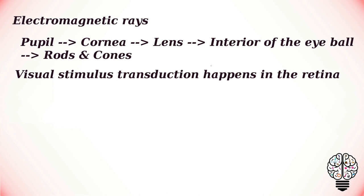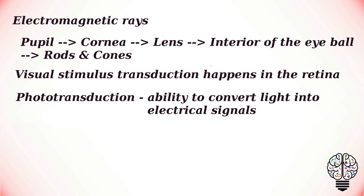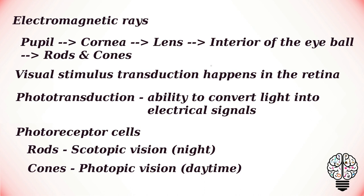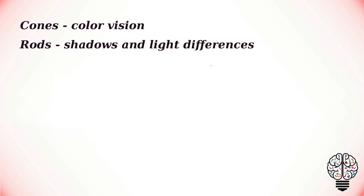Visual stimulus transduction happens in the retina. Photoreceptor cells found in this region have the specialized capability of phototransduction, or the ability to convert light into electrical signals. There are two types of these photoreceptor cells: rods, which are responsible for scotopic vision, that is night vision; and cones, which are responsible for photopic vision, that is daytime vision.